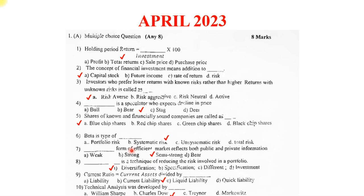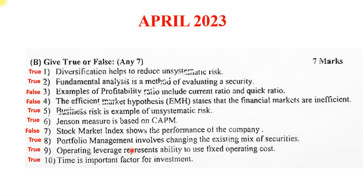Alongside the MCQs, there was True or False for April 2023. Diversification helps to reduce unsystematic risk — true. Fundamental analysis is the method of evaluating a security — true. Examples of profitability ratios include current ratio and quick ratio — false. The efficient market hypothesis states that the financial markets are inefficient — false. Business risk is an example of unsystematic risk — true. Jensen measure is based on CAPM — true. The stock market index shows the performance of the country — false. Portfolio management involves changing the existing mix of securities — true. Operating leverage represents the ability to use fixed operating cost — true. Time is an important factor for investment — true.